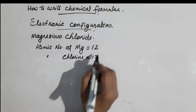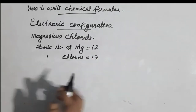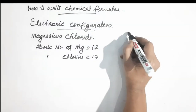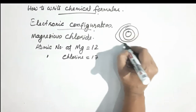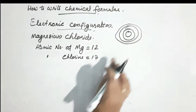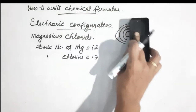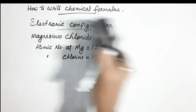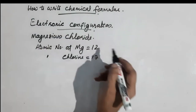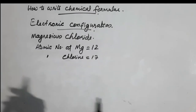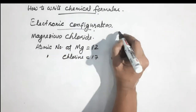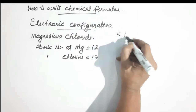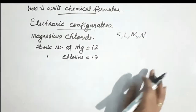This is the electronic configuration. We divide the electrons across shells. We have four shells: K, L, M, and N.